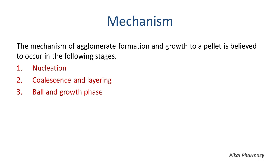The mechanism of agglomerate formation and growth to a pellet is believed to occur in three stages: nucleation, collisions and layering, and lastly the ball growth phase. Nucleation or nuclei formation refers to the formation of particles from the continuous phase due to interaction within the environment. Smaller particle size of nuclei results in better bonding strength.